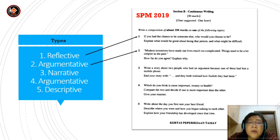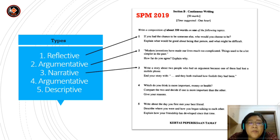Number three: write a story about two people who had an argument because one of them had lost a mobile phone. End your story with 'and they both realised how foolish they had been.' So this is definitely a story or narrative.